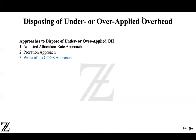First you need to know that there are three methods to dispose of overapplied or underapplied overhead: the adjusted allocation rate approach, the proration approach, and the write-off to cost of goods sold approach. The adjusted allocation rate approach and proration approach are discussed in separate videos. In this particular video, I'm going to discuss how to dispose of underapplied or overapplied overhead using the write-off to cost of goods sold approach.